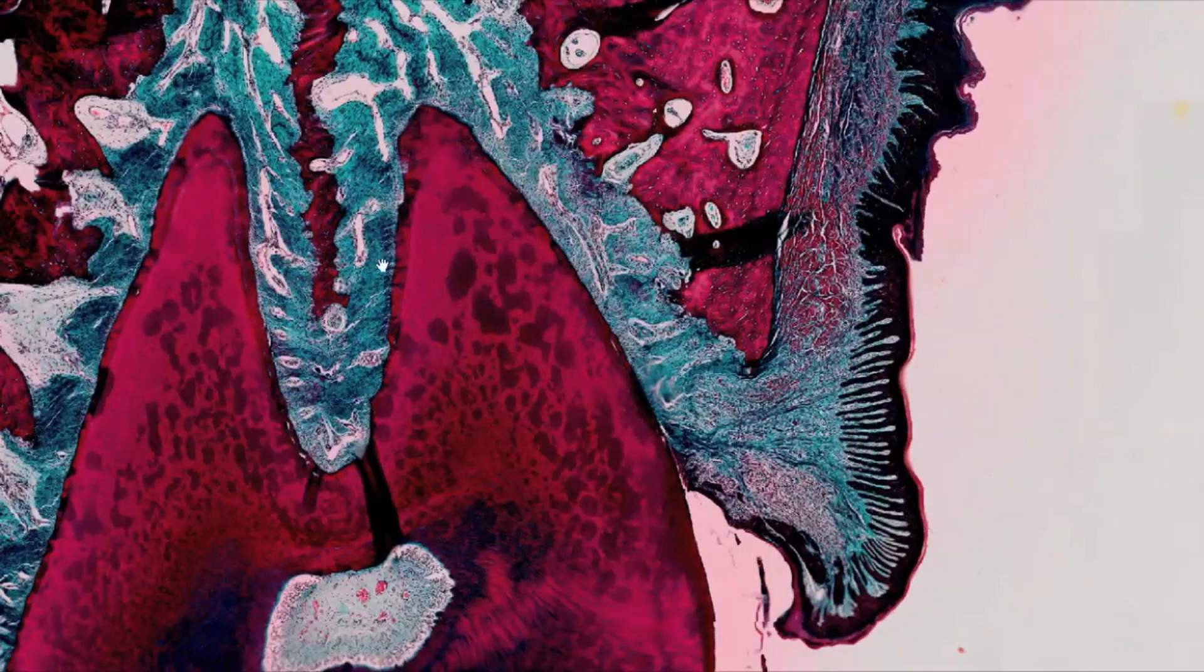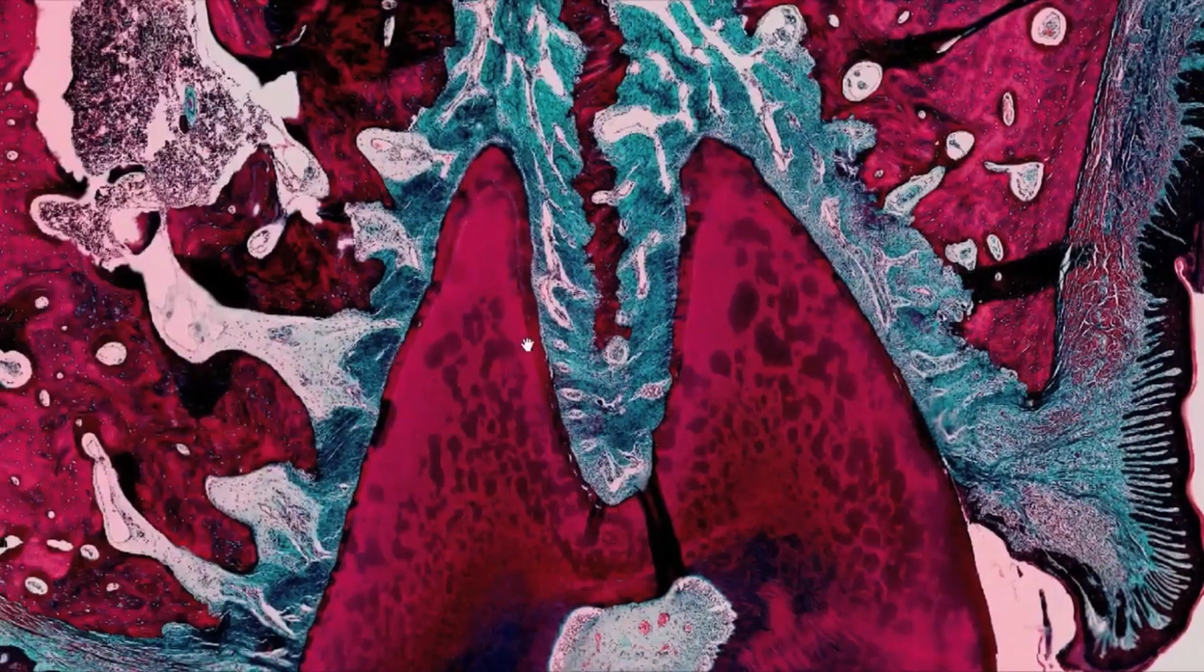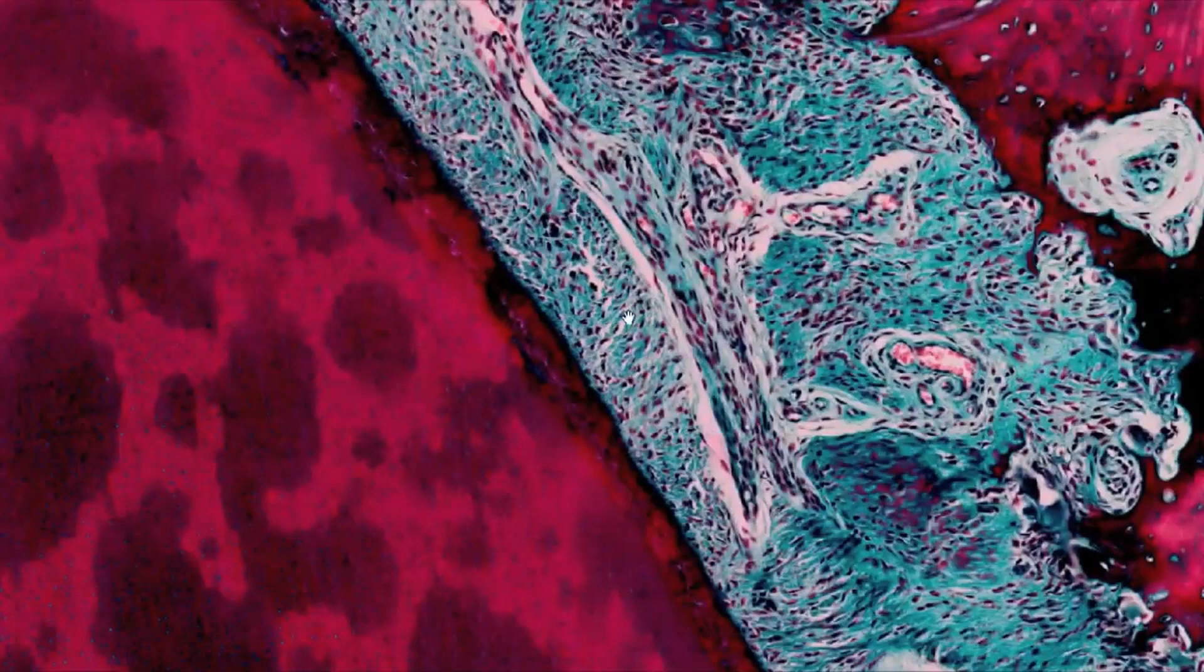The periodontium is made up of both dense connective tissue proper, abundant in blue stained collagen fibers, and loose connective tissue, rich in cells, blood vessels, and nerves.